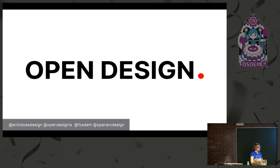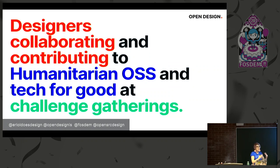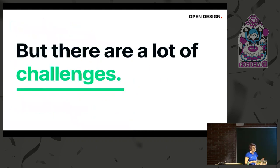This project formally started as a funded project around summer 2019. The first part was largely around discovering the challenges. One of the first things we needed to do was define what we wanted to achieve — beyond what we'd done with the unfunded events — and encapsulate what we'd already done but take it a few steps further. We talk about designers collaborating and contributing to humanitarian OSS at tech-for-good and challenge gatherings. This is how we presented it to the design community, but first we needed to understand the challenges.